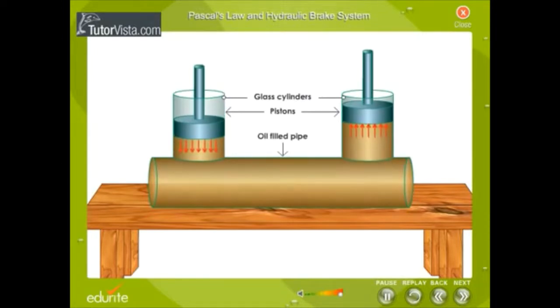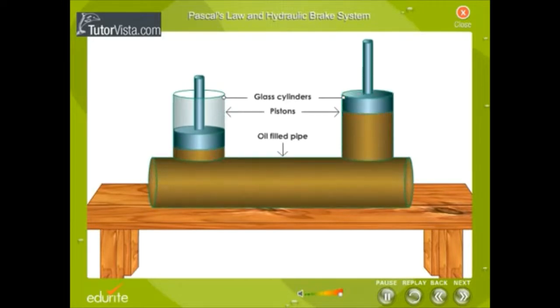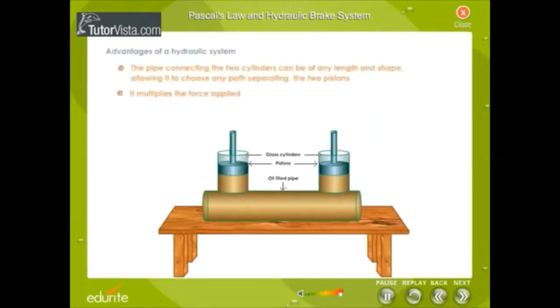If you apply a downward force on one of the pistons, then the force is transmitted to the second piston through the oil in the pipe. Since oil is incompressible, the efficiency is very good. Thus most of the applied force appears at the second piston. The advantage of hydraulic systems is that the pipe connecting the two cylinders can be of any length and shape, allowing it to choose any path separating the two pistons. The other advantage about a hydraulic system is that it multiplies the force applied.